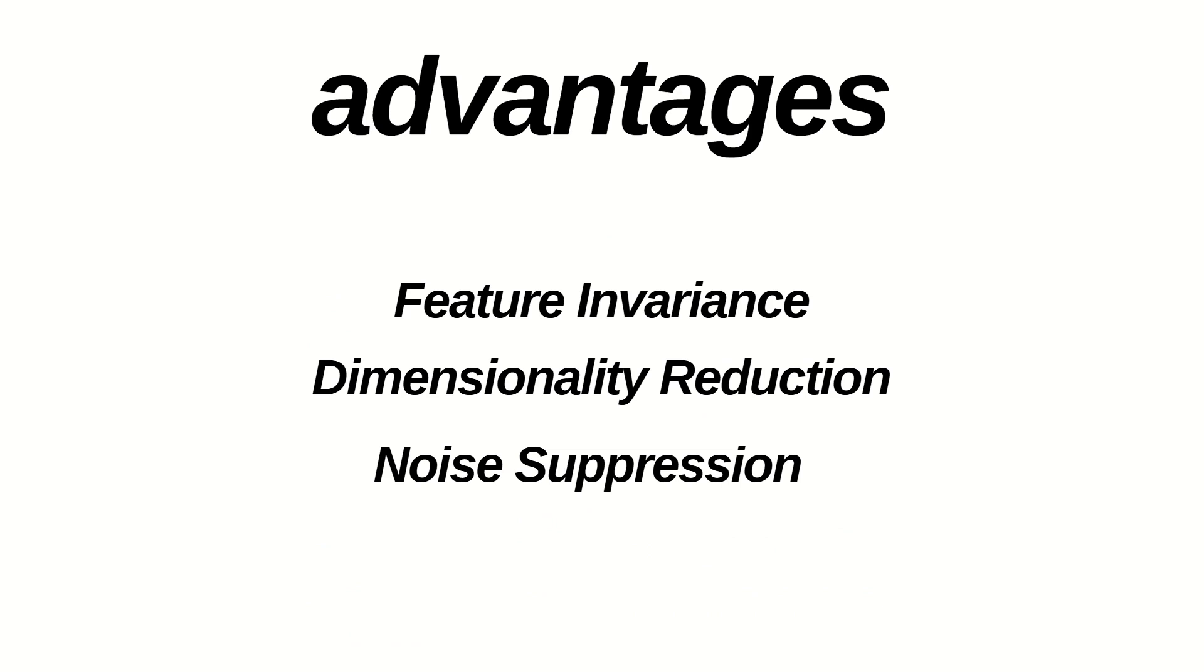So now at the end, what are the advantages of pooling? The first is feature invariance. I've already discussed that max pooling helps the model to become invariant to the location and the orientation of the features. This means the network can recognize an object in an image, no matter where it's located. Second is dimensionality reduction, meaning by down sampling the input, the max pooling significantly reduces the number of parameters and computation in the network, thus speeding up the learning process. And third is noise separation, meaning max pooling helps to suppress noise in the input data.